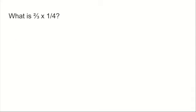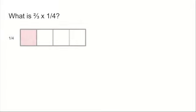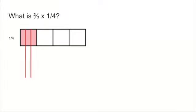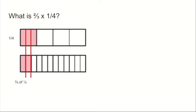Let's try another example: two thirds of one quarter. Take a quarter and find two thirds of that number. Split it into three, find the thirds, and then take two of them. Two thirds of one quarter is two of those pieces. And how many pieces are there? Well, there are three, six, nine, twelve pieces — so it's going to be two twelfths.